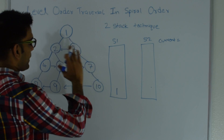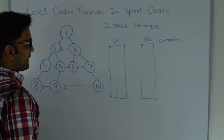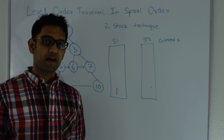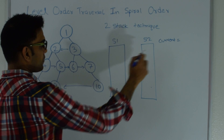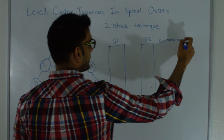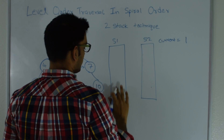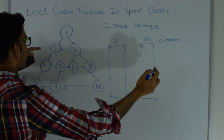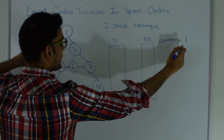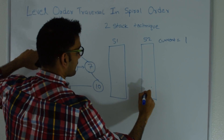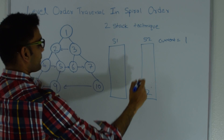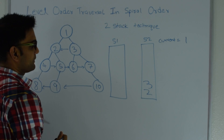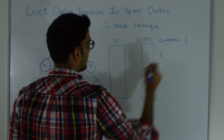Initially I put my root into stack 1, and I stay in the while loop till I have elements in either stack 1 or stack 2. I pop from stack 1 and current becomes 1. If current has a left child, I put that into stack 2. If current has a right child, I put that into stack 2 as well, and then I print 1.